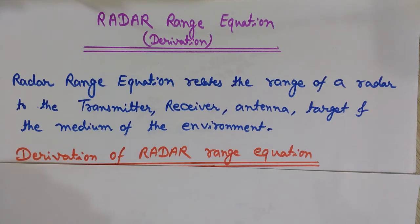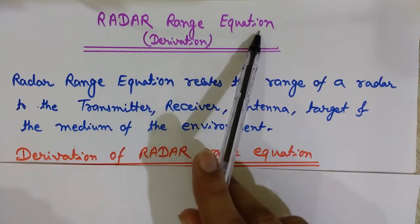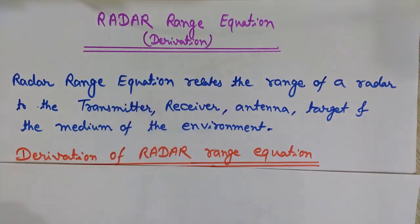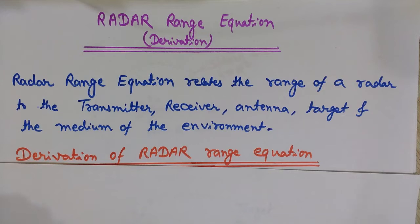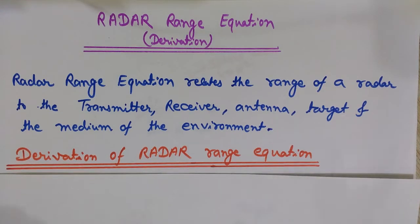Hi friends, I am Lalith Vassist and you are watching Engineering Made Easy. In this video we will discuss the radar range equation and see how we can derive it. This radar range equation relates the range of a radar to the transmitter, receiver, antenna, target, and the environment medium. We will see how it depends on these parameters and its derivation, with some diagrams.